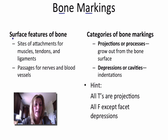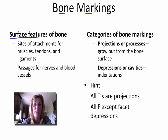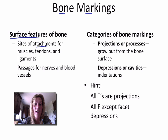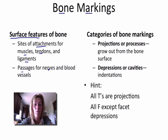A bone marking is a surface feature of the bone. Bones aren't actually smooth material — they have a lot of ridges and depressions, cavities, indentations, and projections coming off of them, and each of those has a specific function. Those surface features provide attachment for muscles, tendons, and ligaments, and they act as passageways for nerves and blood vessels.